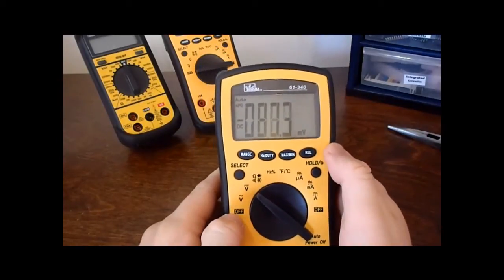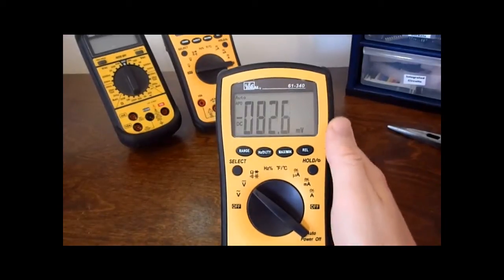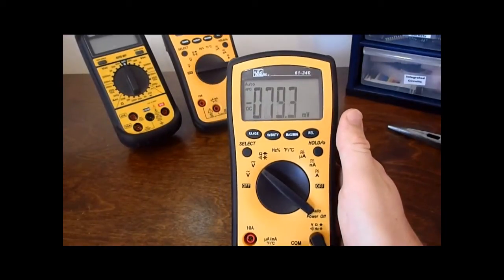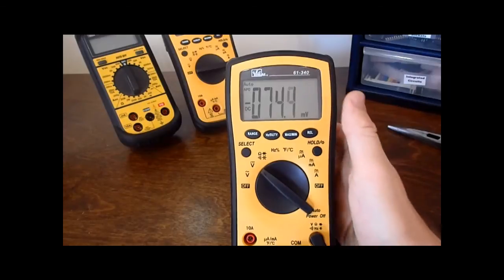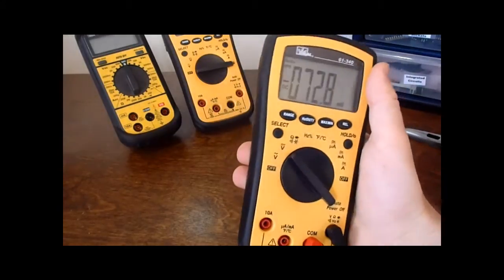When you go to the DC, it's a little bit more impressive. It can measure with 0.5% accuracy plus five digits, which is pretty remarkable. I really like that feature.